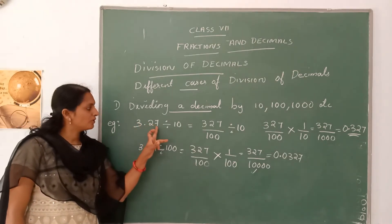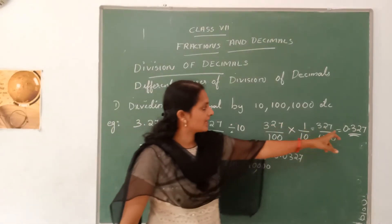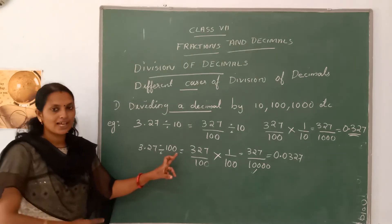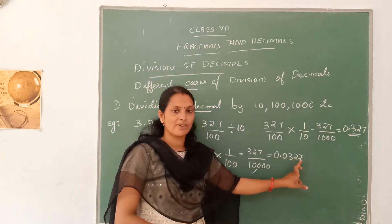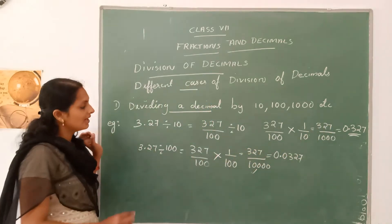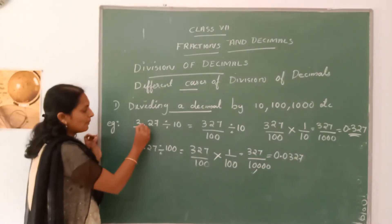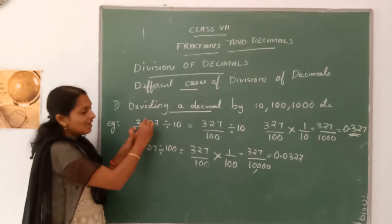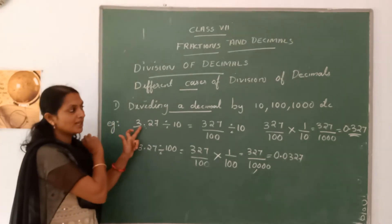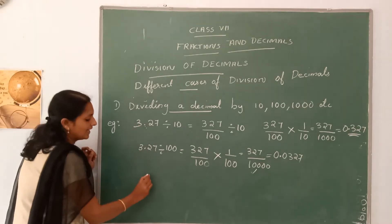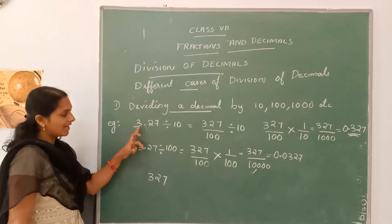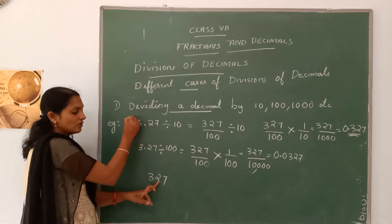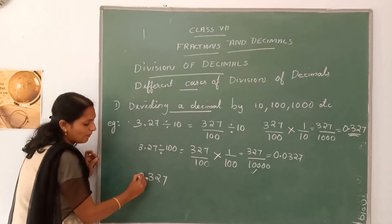When we divide 3.27 by 10, the quotient is 0.327, and when we divide 3.27 by 100, the quotient is 0.0327. Notice the pattern: when dividing by 10, which has one zero, the decimal point moves from right to left by 1 digit. Write the digits 327 and move the decimal one place to the left — that gives 0.327.